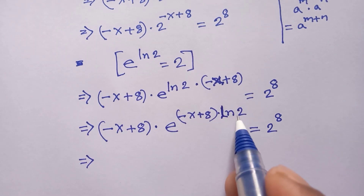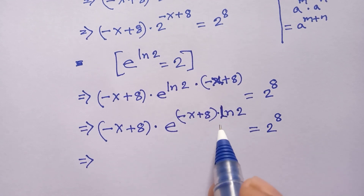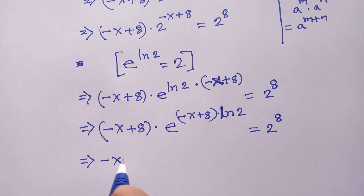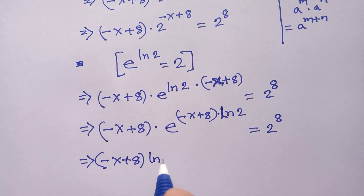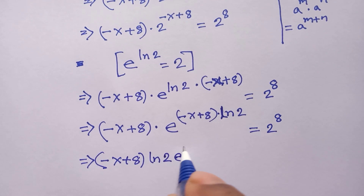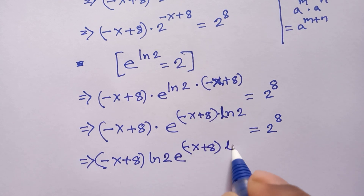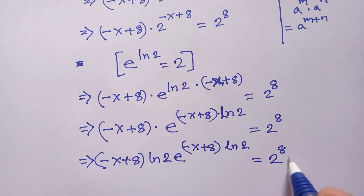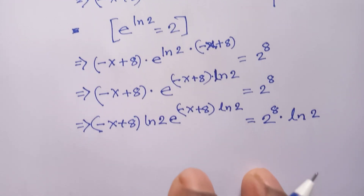Here we have ln(2) on the left side but not on the right side. To balance this equation, we multiply both sides by ln(2), so (−x + 8) times ln(2) times e^((−x + 8) · ln(2)) equals 2^8 times ln(2).